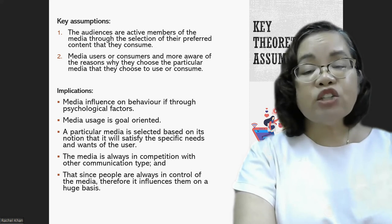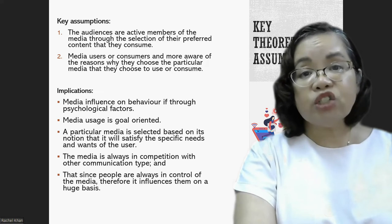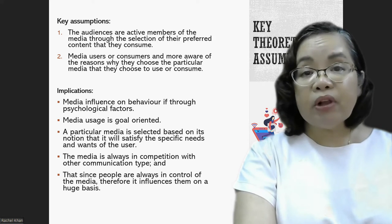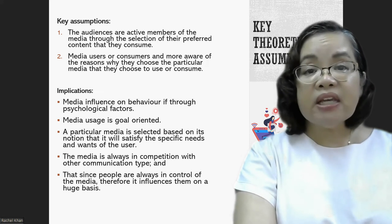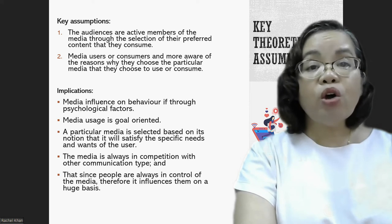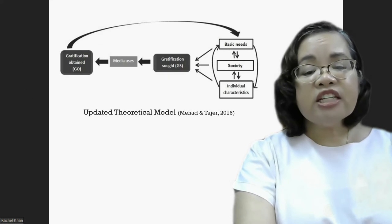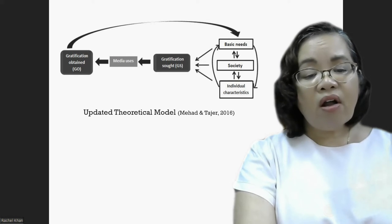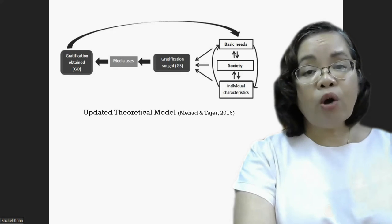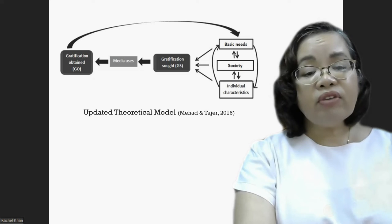Fourth, that media is always in competition with other communication types. And last, that since people are always in control of the media that they use, therefore it can influence them on a huge basis. This is what the theoretical model of uses and gratification would look like, where we find that gratification obtained is a result of the gratification sought and the media chosen.